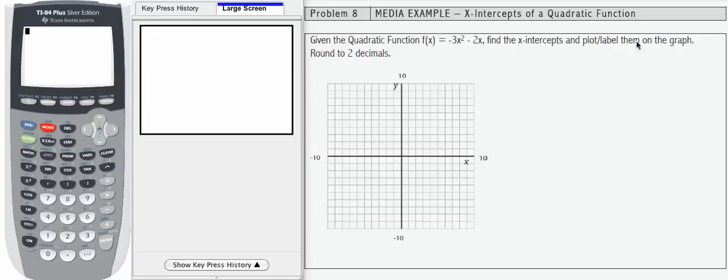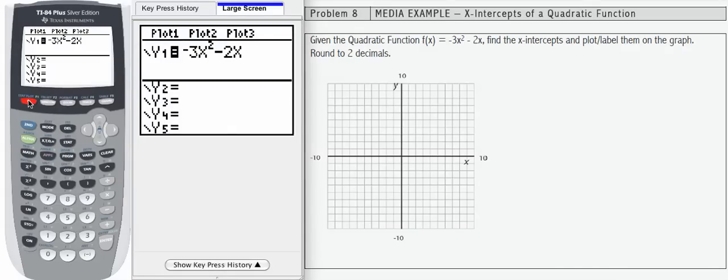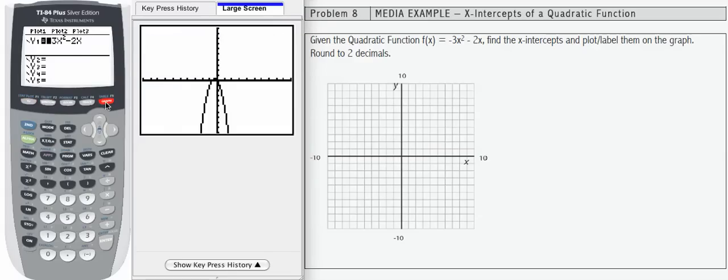If you remember from looking at our function in the previous examples, let's take a look at our graph. Negative 3x squared minus 2x should be entered into y1, and we're graphing on what's called the standard window. That's negative 10 to 10 for x, negative 10 to 10 for y.